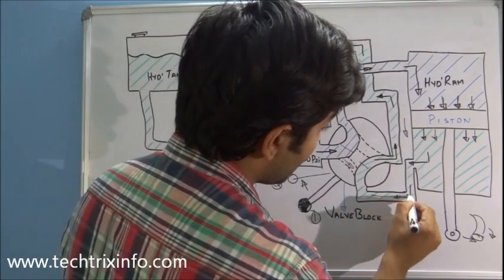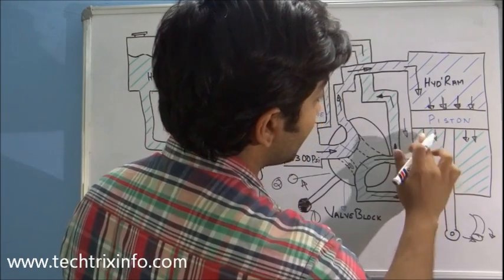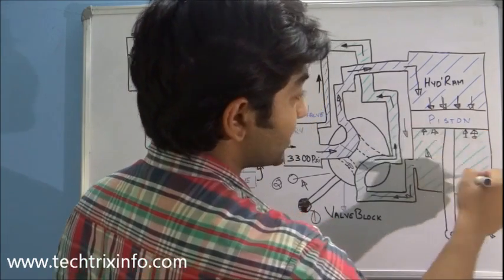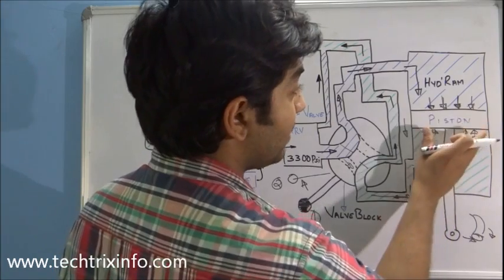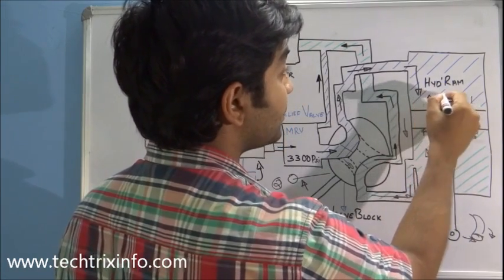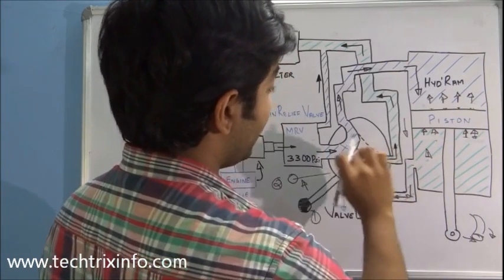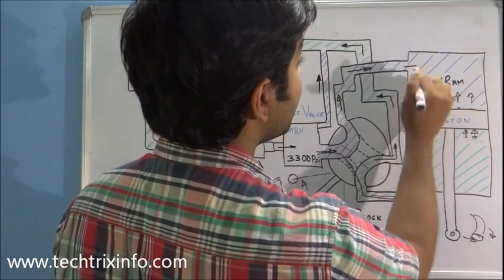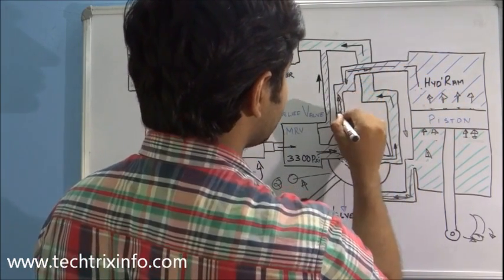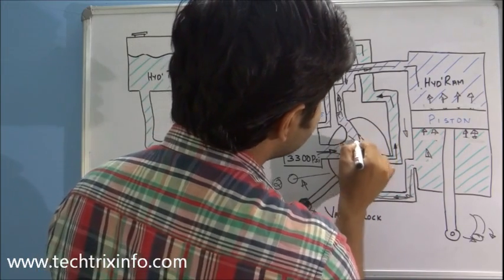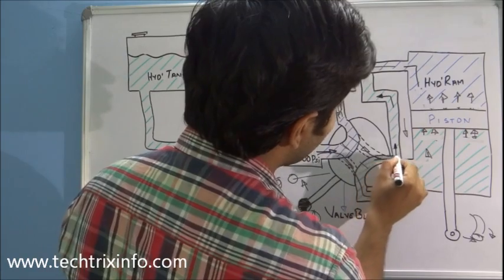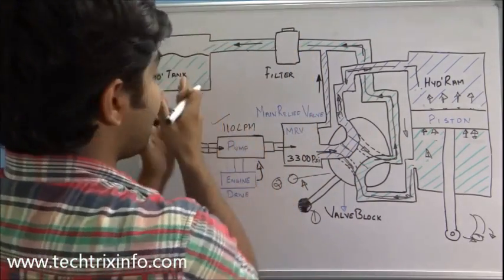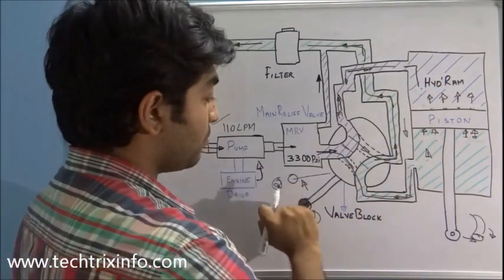The new flow path channels oil in this direction and reaches the rod side of the piston, creating pressure at the bottom. This results in the piston moving upwards. The oil on the head side moves in the opposite direction, channels through the closed line, and gets back to the return line. It goes through the filter, filters the oil, and returns to the tank — achieving the reverse motion.